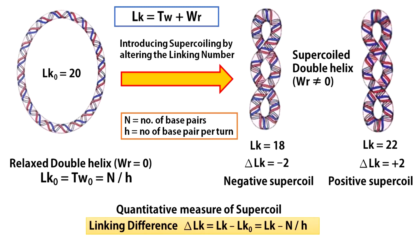How to measure the extent of supercoil? It is measured by the difference of linking number between the supercoiled state and the hypothetically unconstrained state of a DNA molecule. An unconstrained DNA molecule has no torsional strain. It does not coil upon itself. So its writhe is zero.